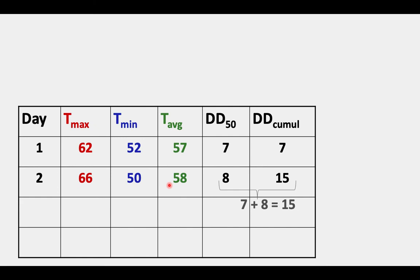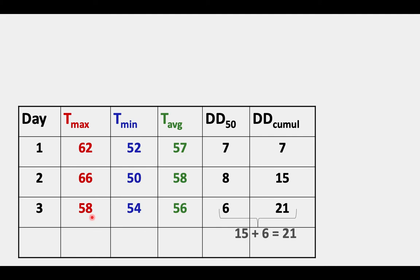On day two, the high was 66 and the low was 50. We calculate the average as 58. We subtract the base temperature of 50, so there were 8 degree days that day. To get the cumulative, you take that day's 8 and add it to the previous day's 7, giving 15 cumulative. Third day: the high was 58, the low was 54, the average was 56. You subtract 50 to get 6 degree days. Take that 6, add it to the previous 15 — so 21 degree days cumulative.